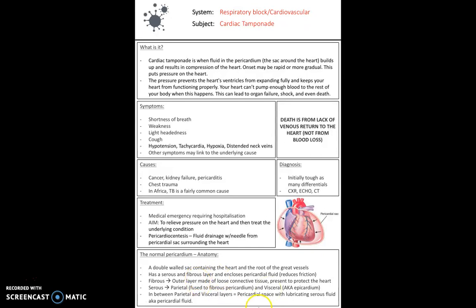But essentially, you've got these layers surrounding the heart, and a cardiac tamponade is when fluid builds up and results in compression of the heart, meaning the heart finds it very difficult to expand fully and function as it should. So the heart can't pump enough blood to the rest of the body when this happens, and this can lead to organ failure, shock, and even death. What's really good to know is that death is actually from lack of venous return to the heart, not actually from blood loss in the body.